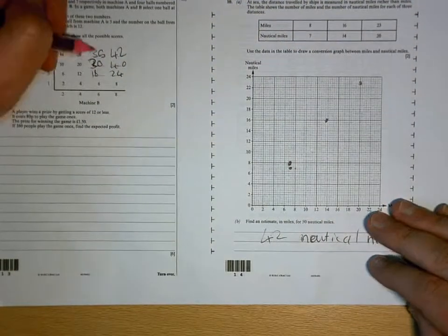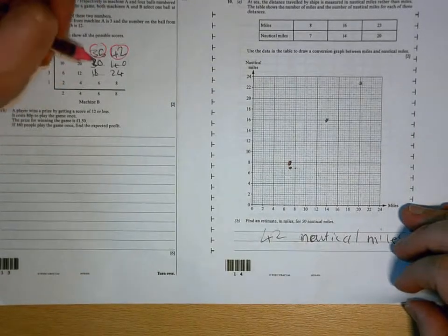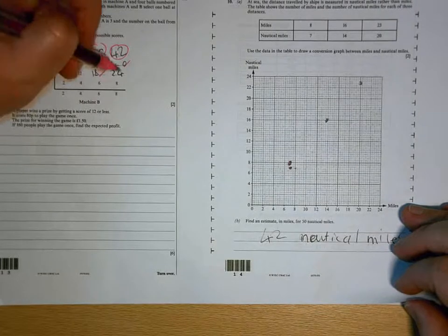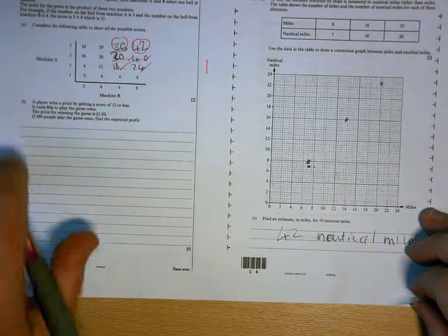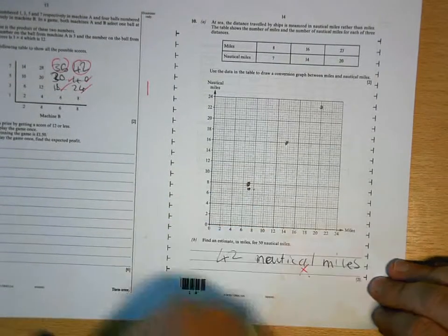You're multiplying here, so 7 times 6 is 42. 7 times 8 is 56. 30 and 40 are right. 18 and 24 are right. Watch how I go through that. 42 is wrong.